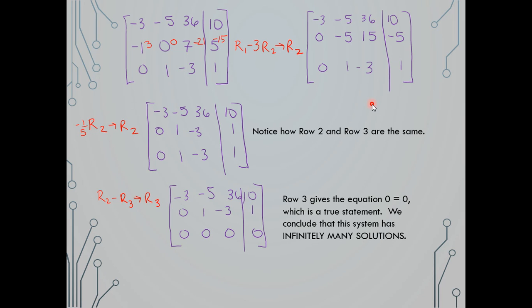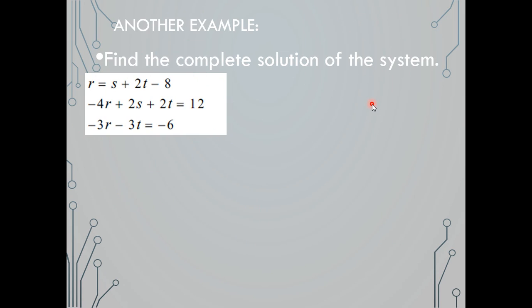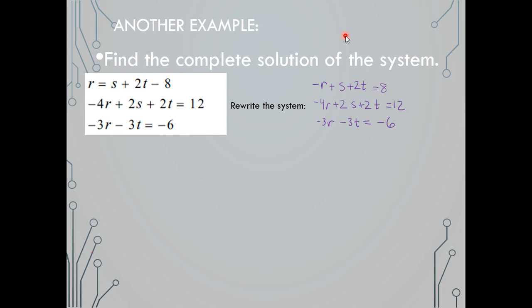I've given an example of no solutions and one of infinitely many solutions. Here are two more examples of each. This next example uses variables r, s, and t. The first linear equation is out of order, so we rearrange it: negative r plus s plus 2t equals 8. The second and third rows stay the same. We then augment the matrix, taking all leading coefficients. Note that the third row is missing s, so we place a 0 in its position.